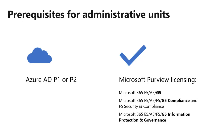There are some prerequisites to use admin units. You do need to have either Azure AD P1 or P2, but you also need to have one of these flavors of G5 licensing — Microsoft G5. If you're currently a G3 customer, you'll need either the G5 compliance add-on or the G5 Information Protection and Governance add-on. Those are the prerequisites.